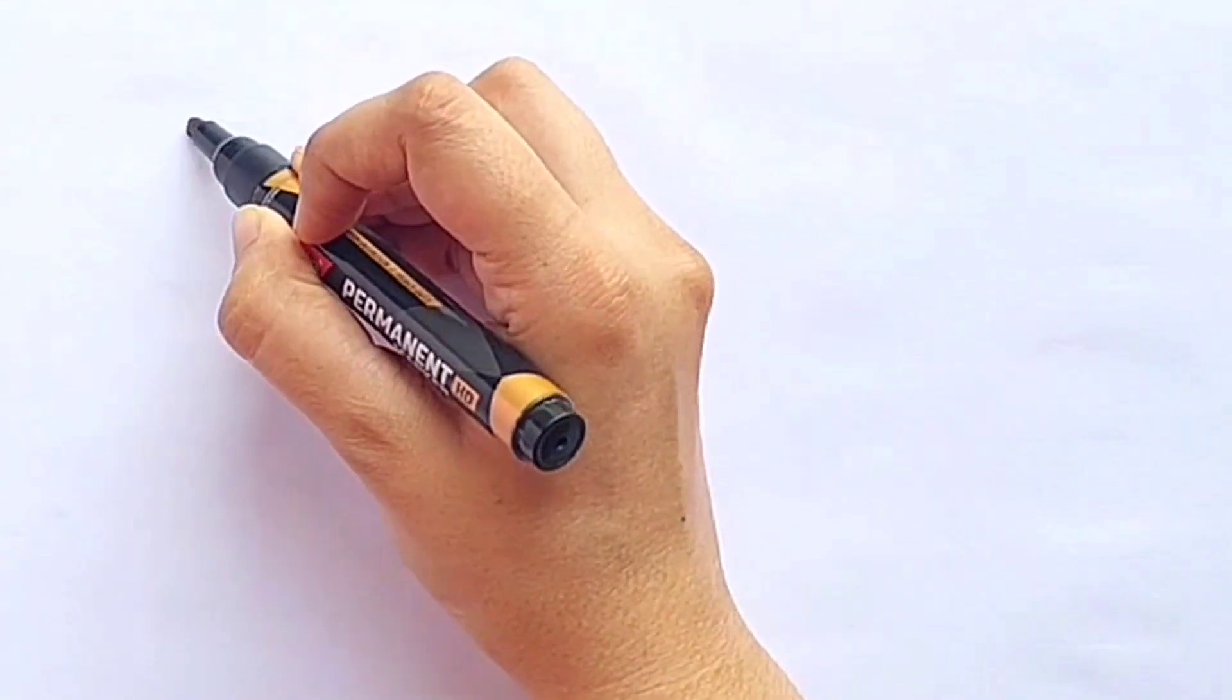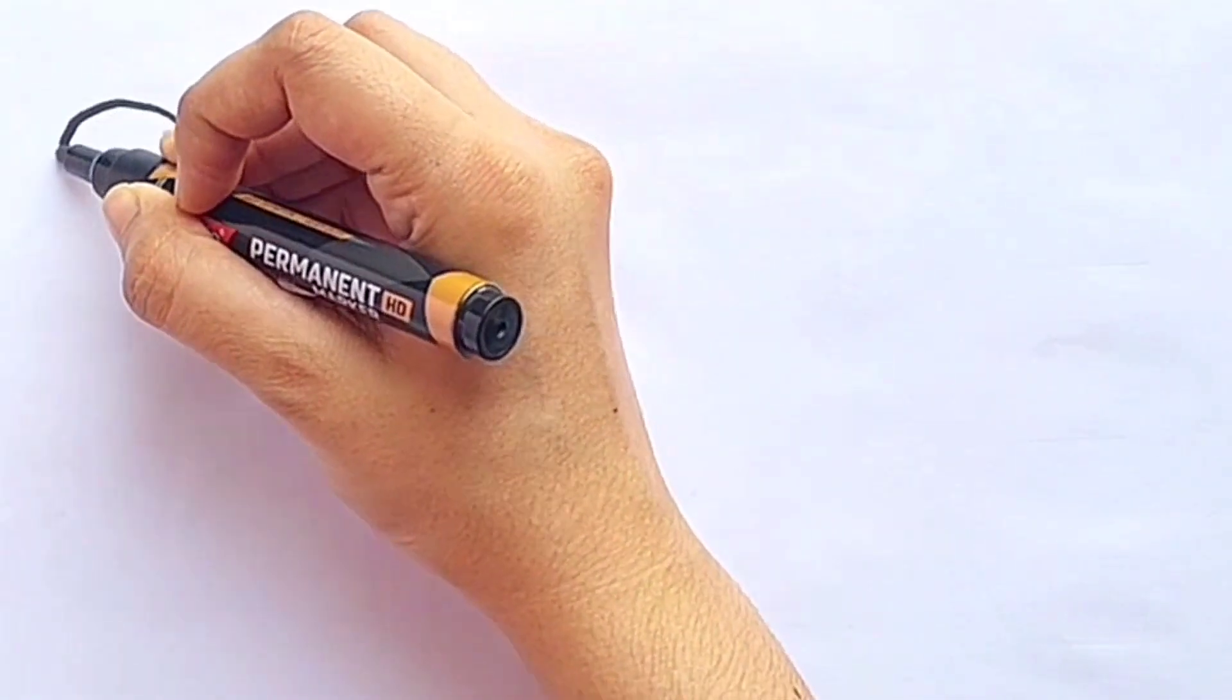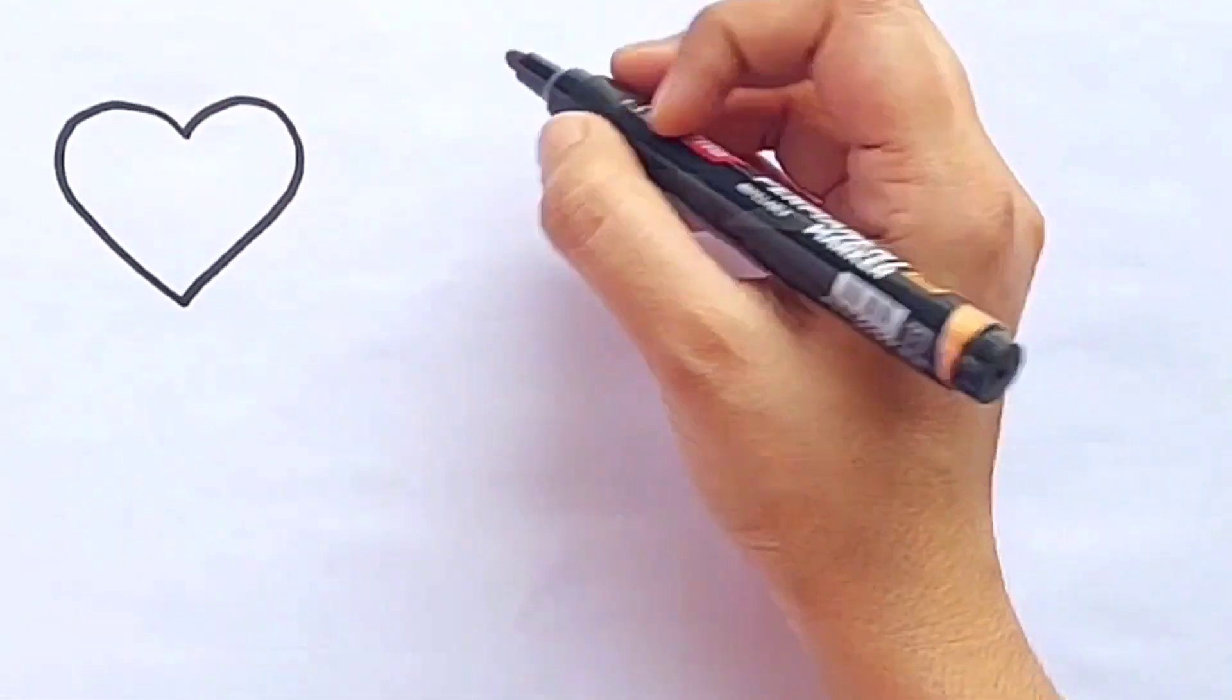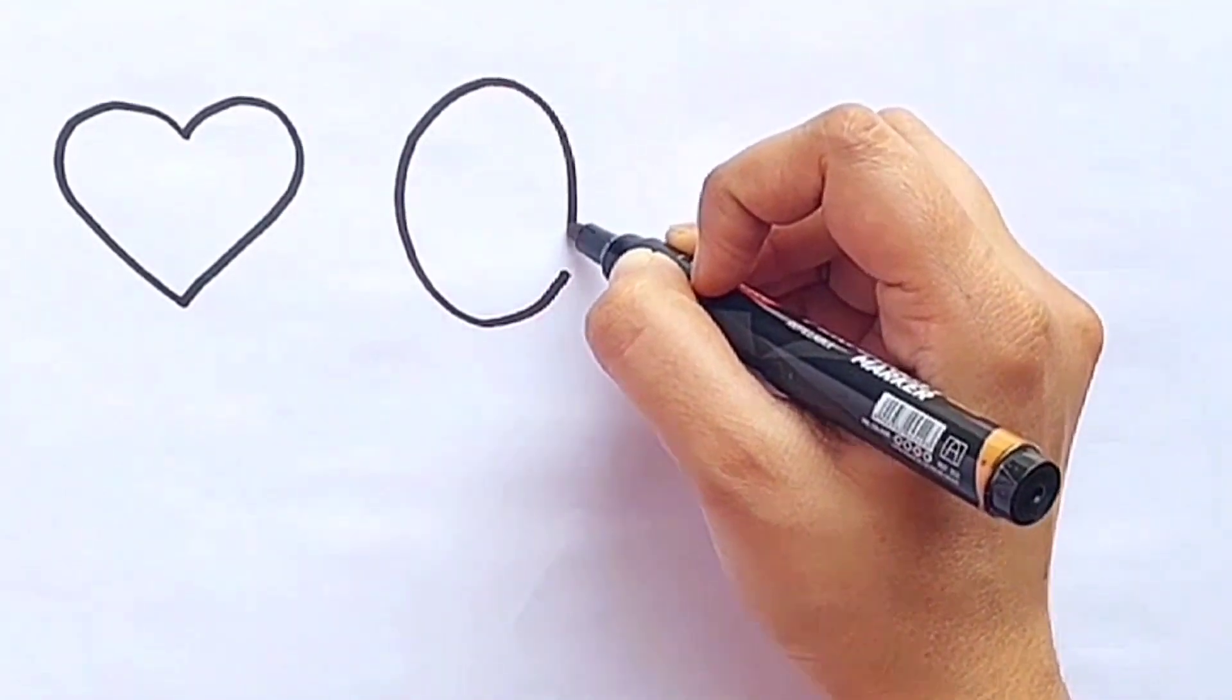Hello kids, let's learn how to draw shapes and colors. Name: heart, oval.